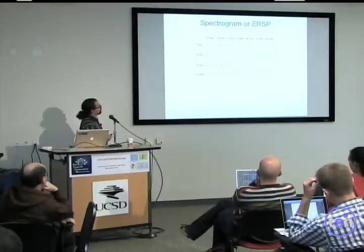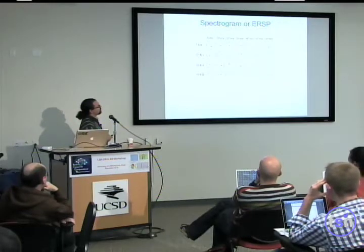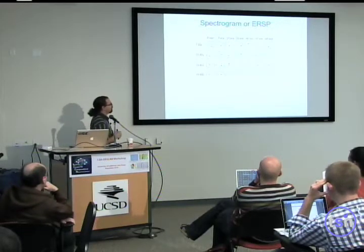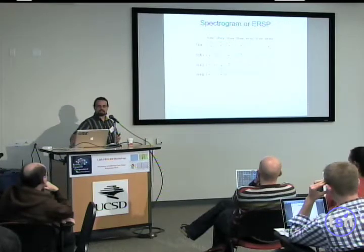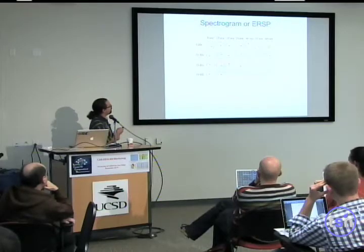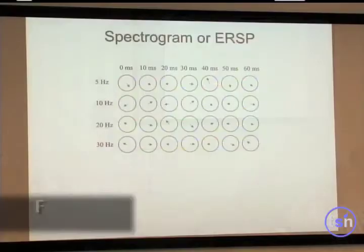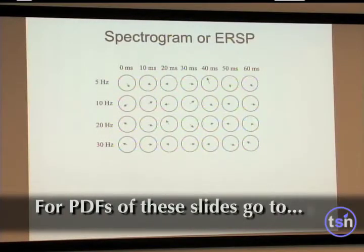Now what we're doing is that we were averaging these windows across time. And what we can do instead is that we can have data trials. And this was one trial and we had at 5 hertz, 10 hertz, 20 hertz, 30 hertz. And we have all these latencies of windows overlapping or not.